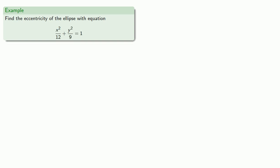Or we could take something like this, a² equals 12, b² equals 9, so our eccentricity will be calculated from these values.